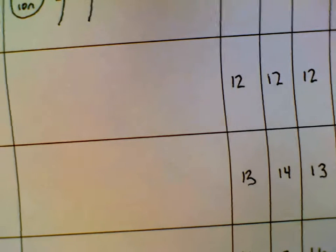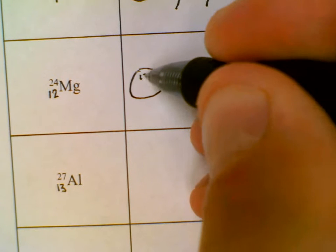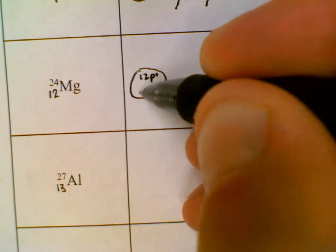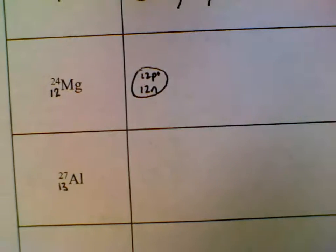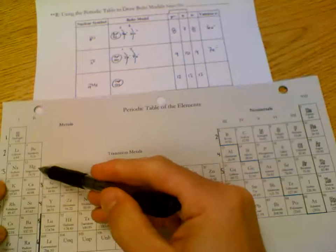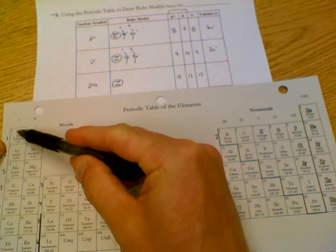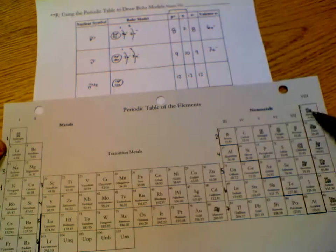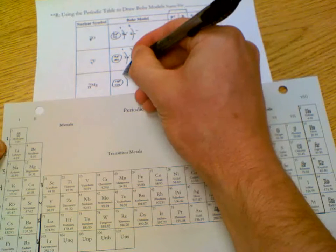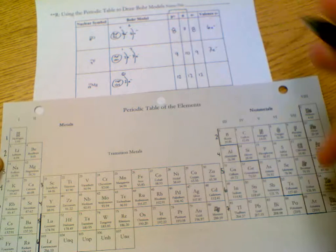For magnesium, I have twelve protons, twelve neutrons. I'm going to start with the nucleus. Twelve protons, twelve neutrons. Zoom out so you can see the periodic table. Magnesium is right here. That's where we need to stop counting. Start at hydrogen. Energy level one. One square, two. This is energy level one. There are two electrons in energy level one.